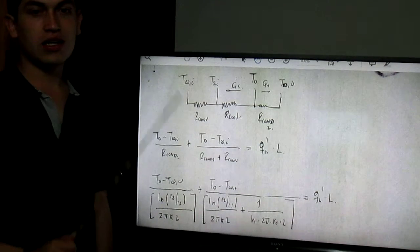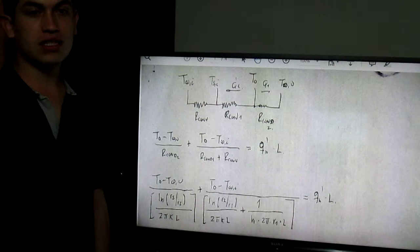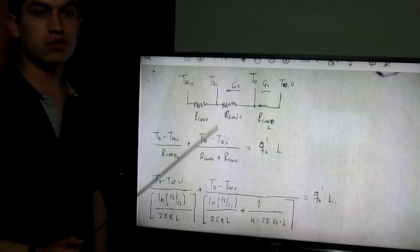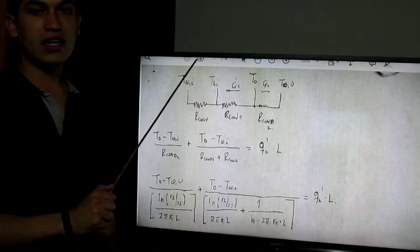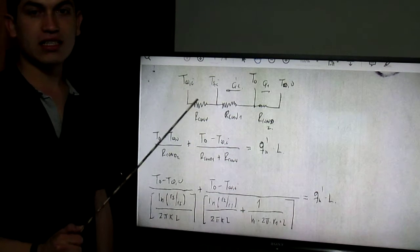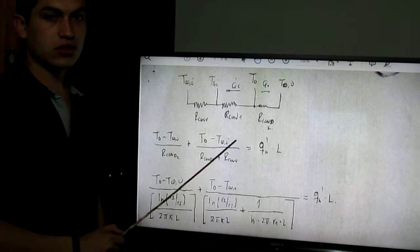A composite cylindrical wall is composed of two materials of thermal conductivity K sub A and K sub B and are separated by a very thin electrical resistance heater at the radius R2.